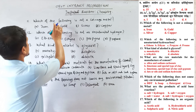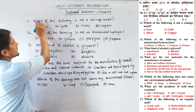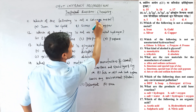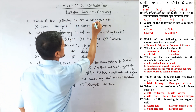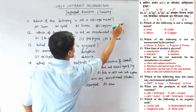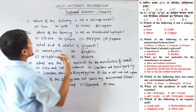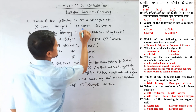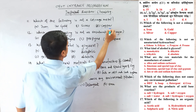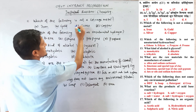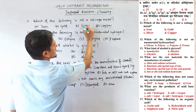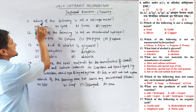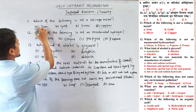Question number 11: Which of the following is not a coinage metal? Coinage metals are those used to make coins. Gold, silver, and copper are coinage metals. Iron is not a coinage metal, so iron is the correct answer.